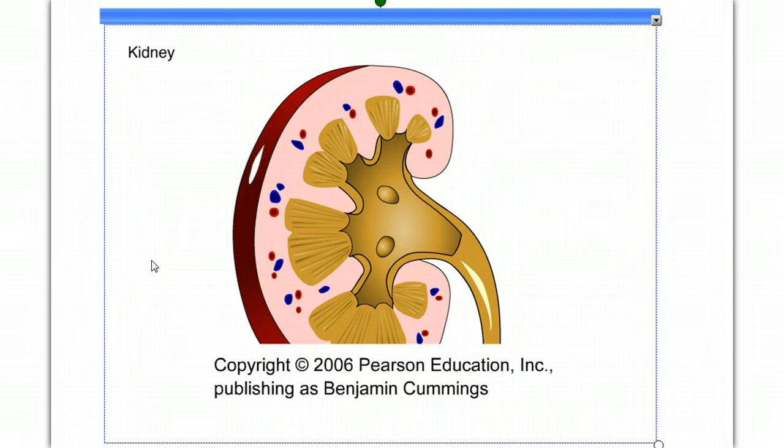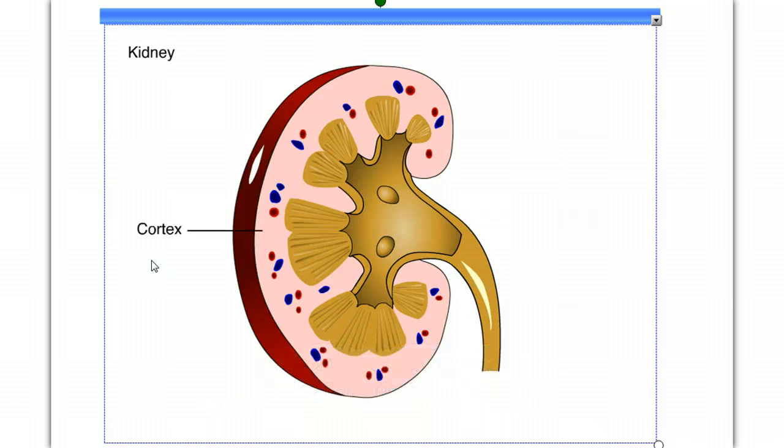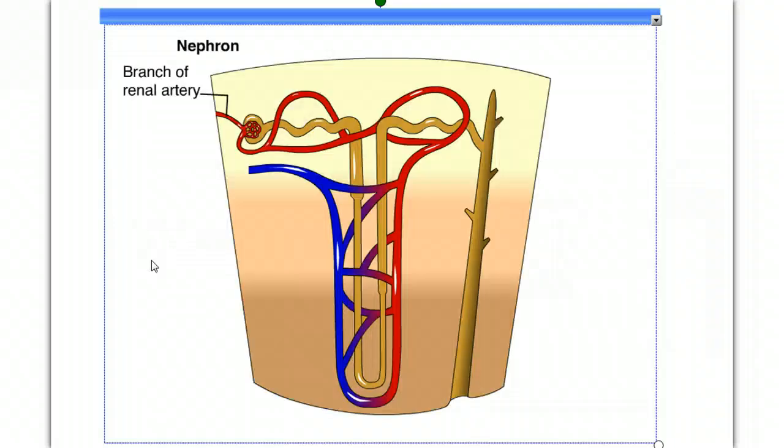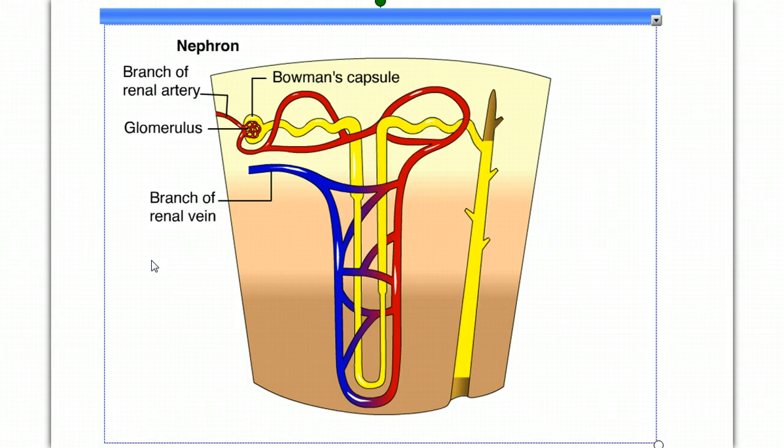The outer part of the kidney is called the cortex. Inside the cortex is the medulla. Urine collects in the renal pelvis and drains from the kidney through a tube called the ureter. A tiny branch of the renal artery carries blood to each nephron for processing. A tiny vein carries blood away. Blood pressure forces fluid through the walls of a cluster of capillaries called the glomerulus, and it collects in the cup-shaped Bowman's capsule. The filtrate is refined as it passes through the twisted nephron tubule. Useful substances are returned to the blood, and the remainder collects as urine. Refined urine is carried by the collecting duct into the renal pelvis for excretion from the body.